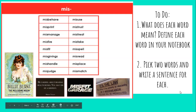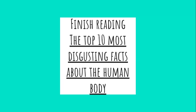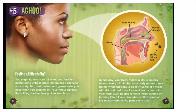So again, your to-do: what does each word mean? Define them in your notebook, then pick two to write a sentence for. After you've done that, we're going to finish reading the top 10 most disgusting facts about the human body. It starts with number five, then number four, three, two, and number one.